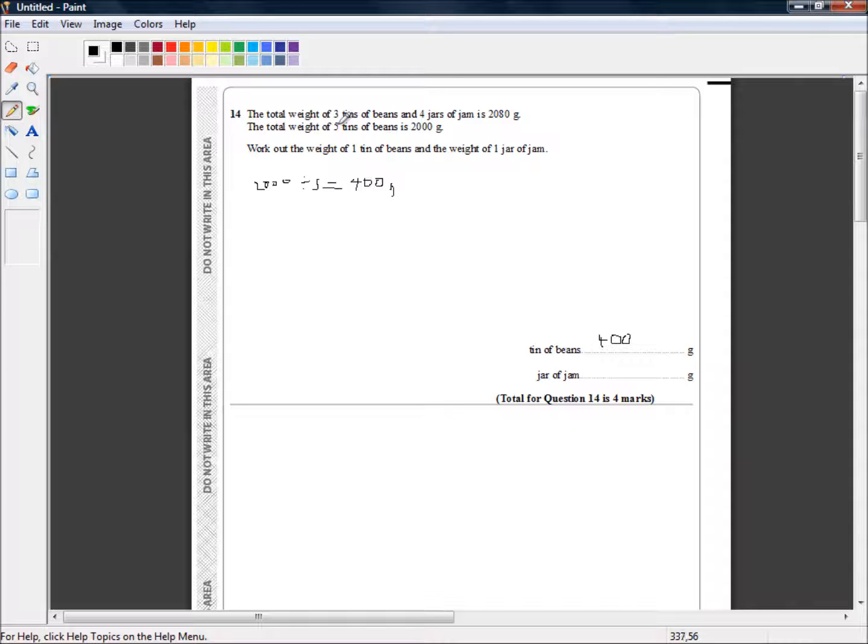So now we need the weight of the jars of jam. Three tins of beans and four jars of jam is 2080. So if one tin of beans is 400 grams, then three tins of beans is 1200 grams. So four jars of jam...